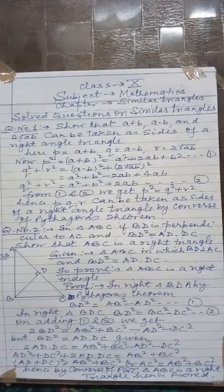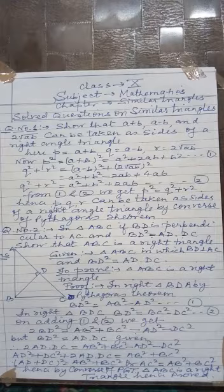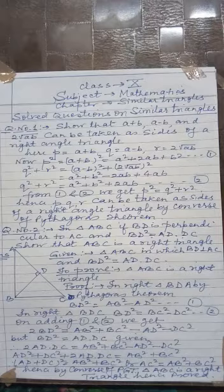Now you see, the right-hand sides of both equations are equal, so we get p² = q² + r². Therefore, p, q, r can be taken as sides of a right-angle triangle by the converse of Pythagoras theorem. Sometimes you are asked questions on alpha-numeric values instead of numeric values, and you proceed the same way.